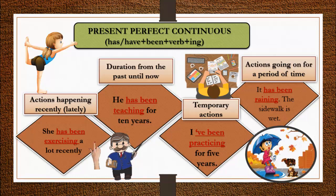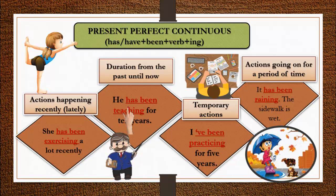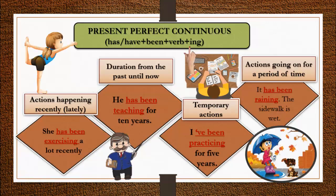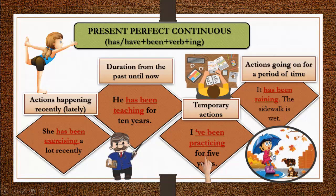We also use present perfect continuous for duration from the past until now. For example: 'He has been teaching for 10 years' — he is still teaching and has done so for ten years. Compare with present perfect: 'He has been a teacher since 2002' — similar meaning. For temporary actions: 'I have been practicing for 5 years.' And for actions going on for a period of time: 'It has been raining — the sidewalk is wet.'